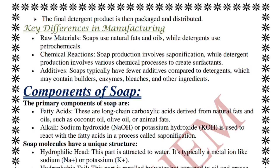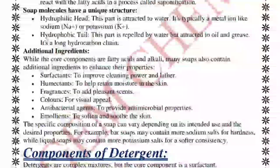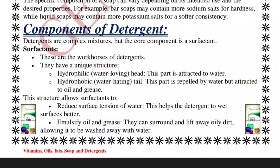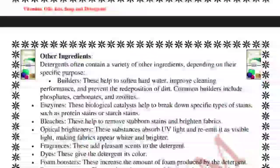The primary component of soap is a fatty acid salt with an alkali. Soap molecules have a unique structure: a hydrophilic head attracted to water and a hydrophobic tail. Other soap ingredients include surfactants, humectants, fragrances, colorants, antibacterial agents, and emollients. For detergents, the core component is the surfactant, which also has a hydrophilic head and hydrophobic tail — allowing it to reduce surface tension, emulsify oil and grease.